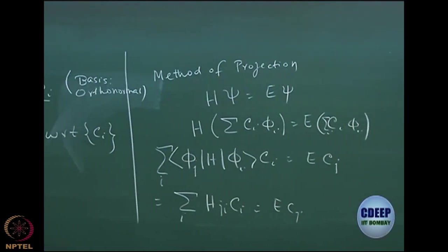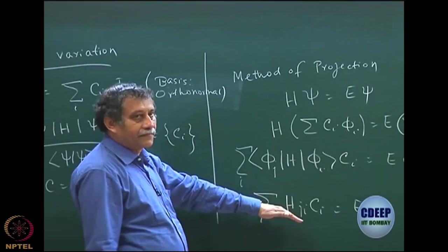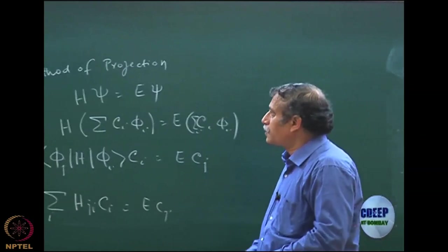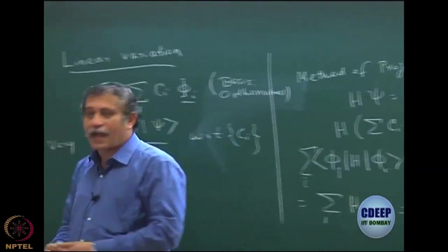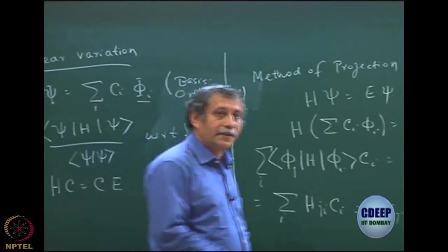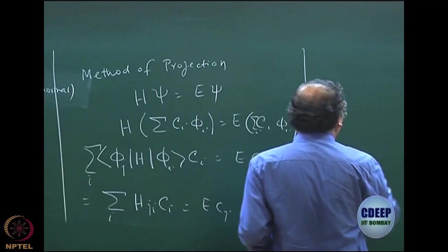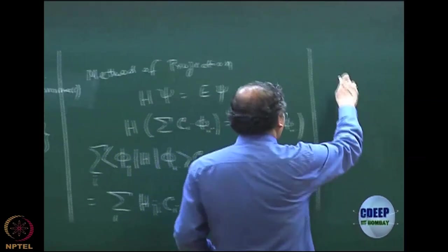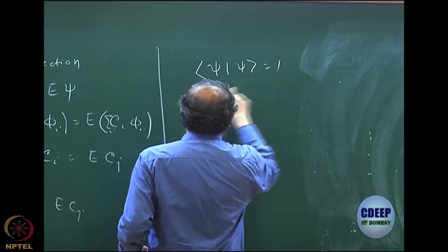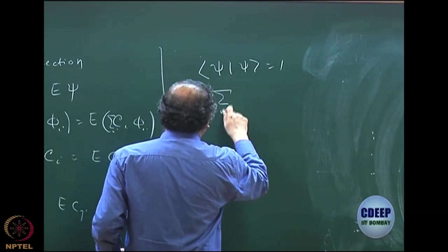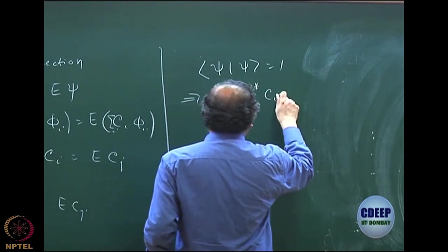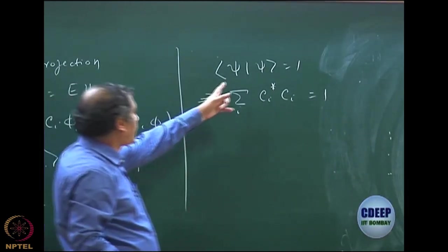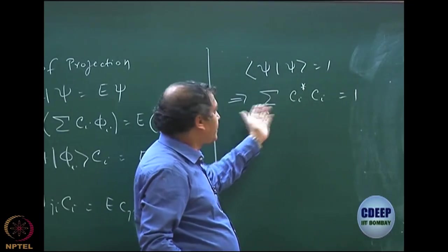So this is the theorem — we already proved that by the method of projection we get the same equation. The method of projection is actually very quick, just a one-line proof. I hope all of you remember how we got this equation by the method of variation. To refresh: we expand psi subject to <psi|psi> = 1. In an orthonormal basis, <psi|psi> = 1 means sum over i of C_i* C_i = 1, which is easy to expand since <phi_i|phi_j> = delta_ij.